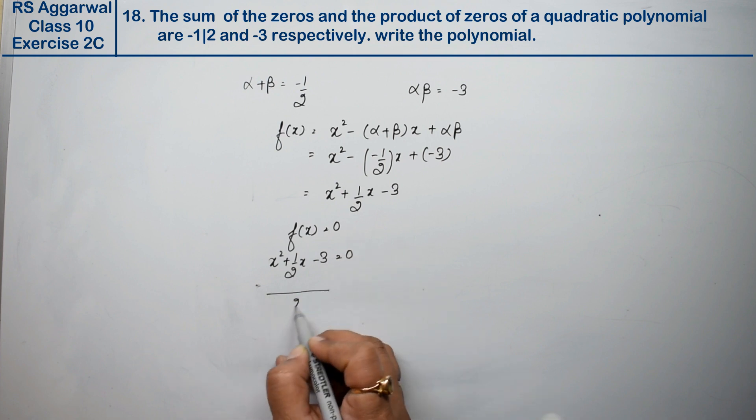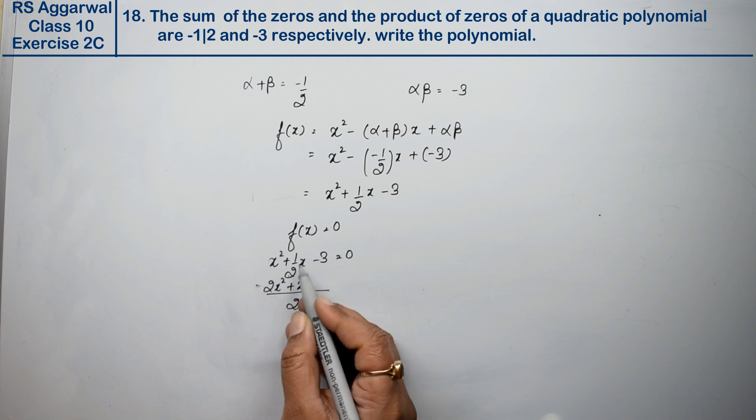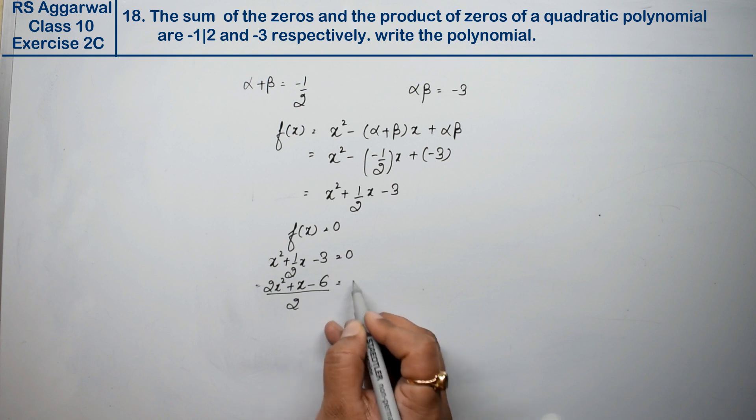What did we do here? We took LCM and multiplied it with this. So 2x square plus, 1 into x is x, minus 3 into 2 is 6, equals to 0.